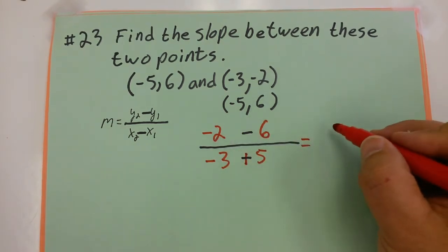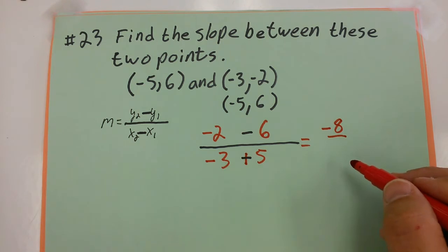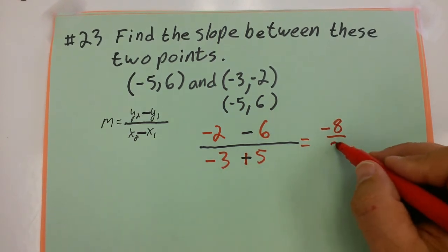Negative 2 minus 6 is going to give me negative 8 over negative 3 plus 5, or 5 minus 3, as 2.